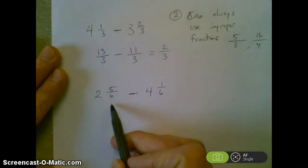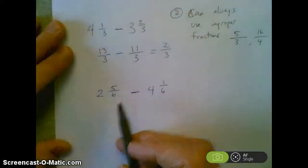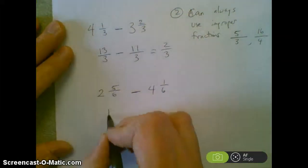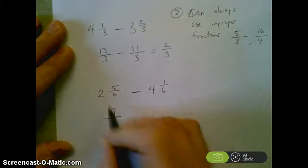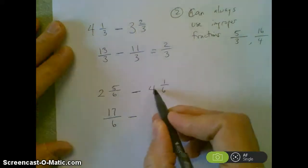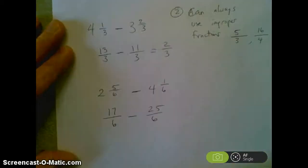and I'll know how negative my answer is, how far to the left on a number line I go. So 6 times 2 is 12, plus 5 is 17, so that becomes 17/6. 6 times 4 is 24, plus 1 is 25, so I get 25/6.